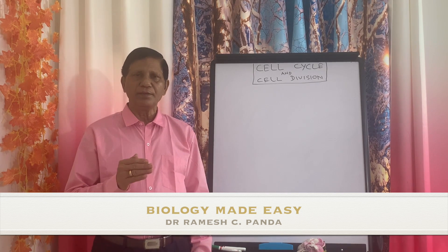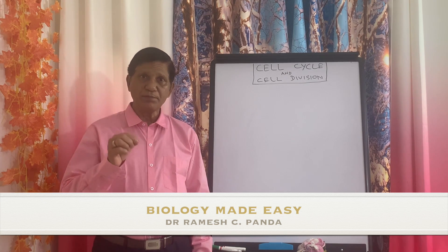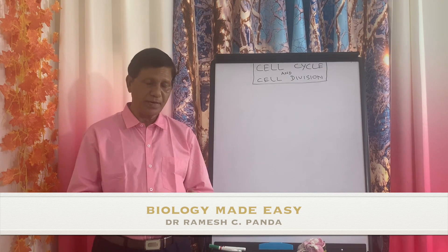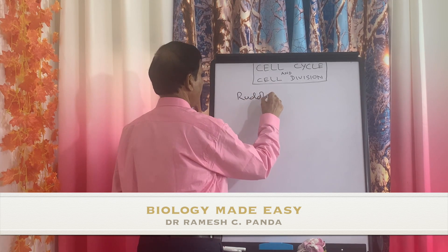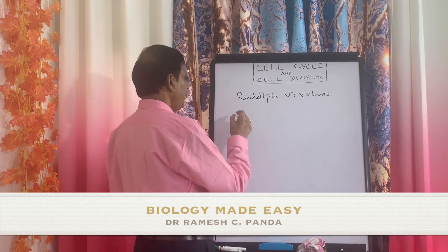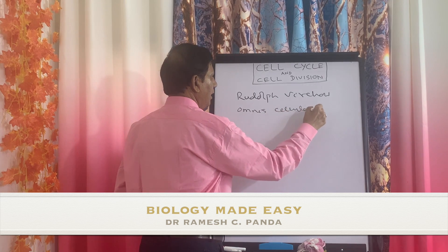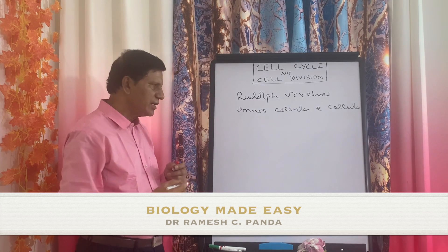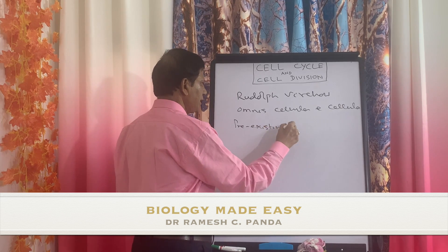Cell division is a characteristic of all living organisms. The idea that cells divide was first given by Rudolf Virchow. Rudolf Virchow gave the statement 'Omnis Cellula E Cellula' — a Latin term which means cells arise from pre-existing cells.